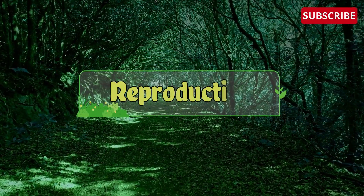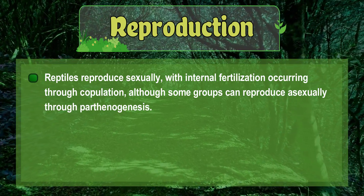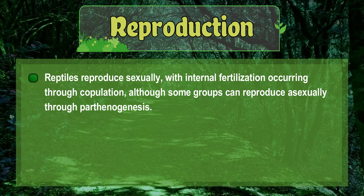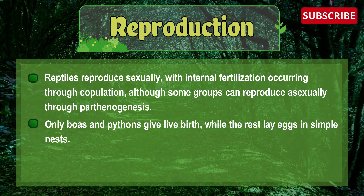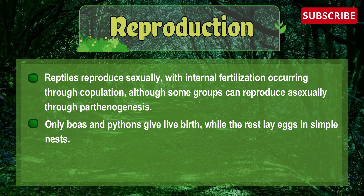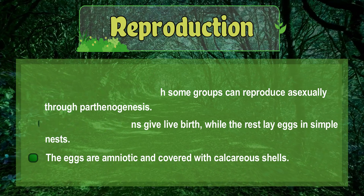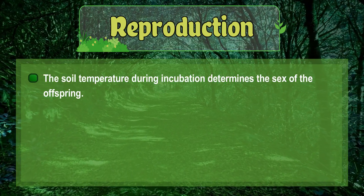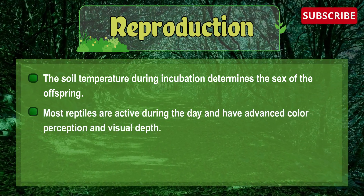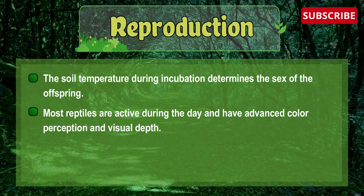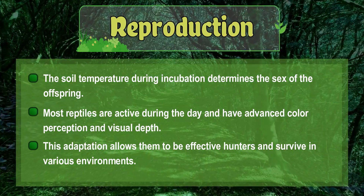Reptiles reproduce sexually with internal fertilization occurring through copulation, although some groups can reproduce asexually through parthenogenesis. Only boas and pythons give live birth, while the rest lay eggs in simple nests. The eggs are amniotic and covered with calcareous shells. The soil temperature during incubation determines the sex of the offspring. Most reptiles are active during the day and have advanced color perception and visual depth, allowing them to be effective hunters.